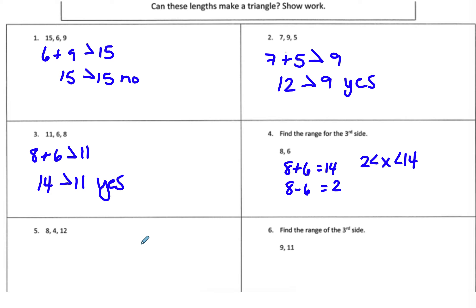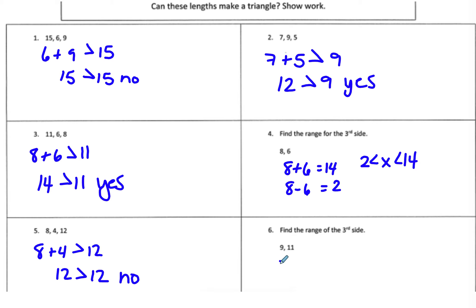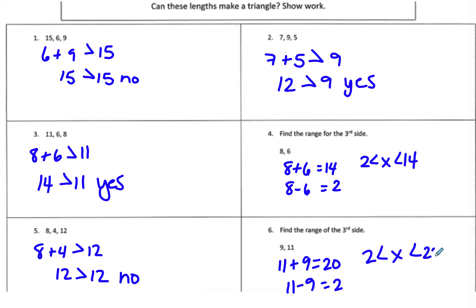Go ahead and pause the video and try numbers five and six on your own. For number five, 8 plus 4 is 12 — is 12 greater than 12? No. For the range problem with 11 and 9: 11 plus 9 equals 20, and 11 minus 9 equals 2, so 2 is less than X which is less than 20.